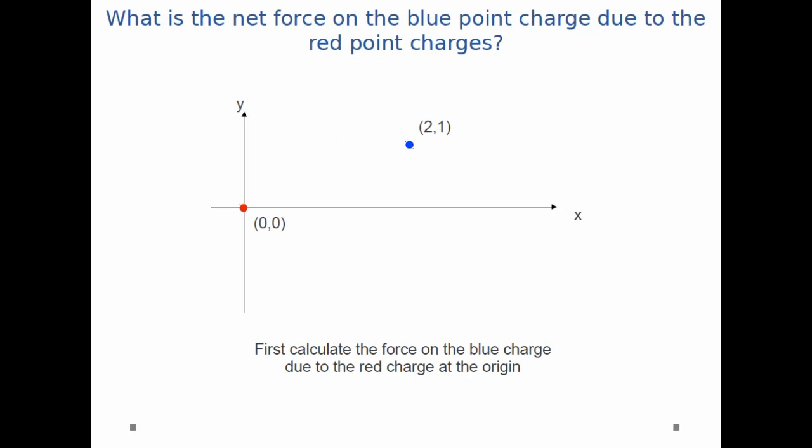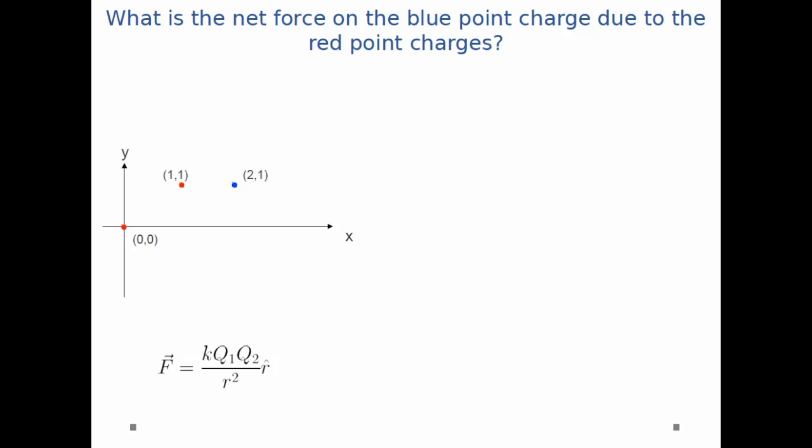So first we're going to calculate the force on the blue charge due to the red charge at the origin, then we're going to calculate the force on the blue charge due to the red charge at the point (1,1), and finally we're going to add the two forces from each of those two situations together. This is called superposition. So let's actually jump right in and do the math.